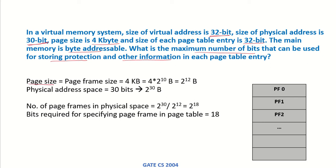The page size, which is also equal to the page frame size, is 4 kilobytes. Expanding this into bytes: 4 × 2^10 bytes = 2^12 bytes. We are also given that the physical address space is 30 bits, meaning the total physical address space is 2^30 bytes. The number of page frames in physical memory is 2^30 divided by 2^12, which gives us 2^18 page frames.